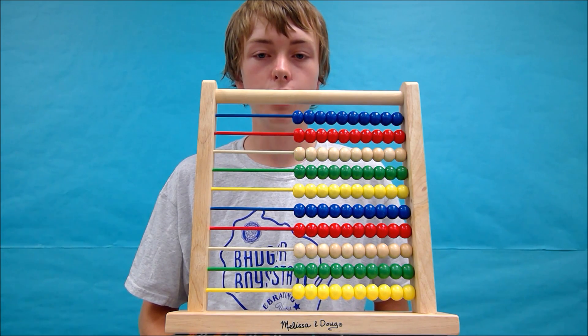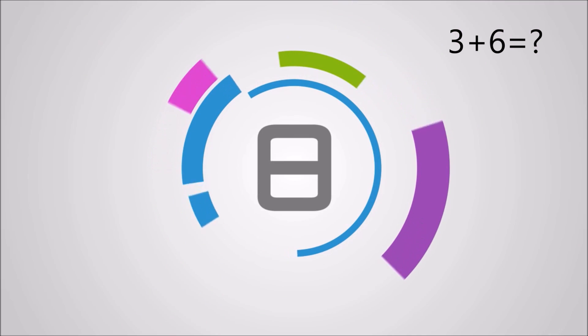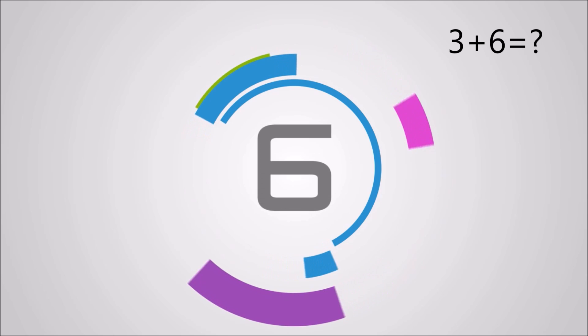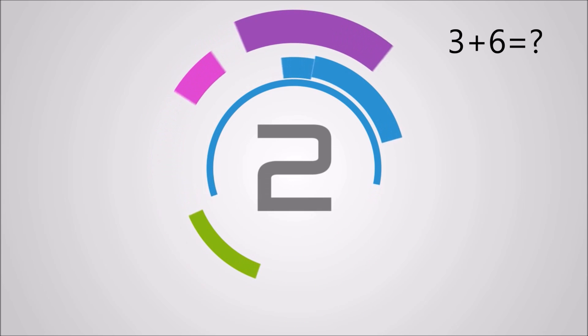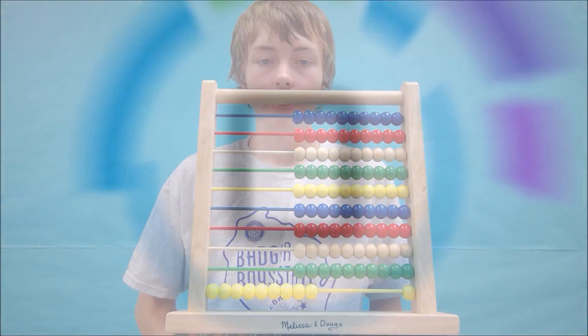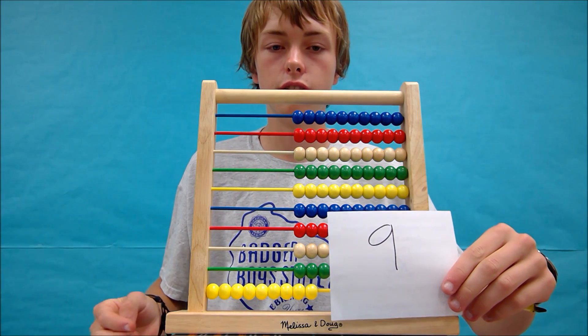Let's start by solving 3 plus 6. The answer you should have got was 9, and your abacus should look like this.